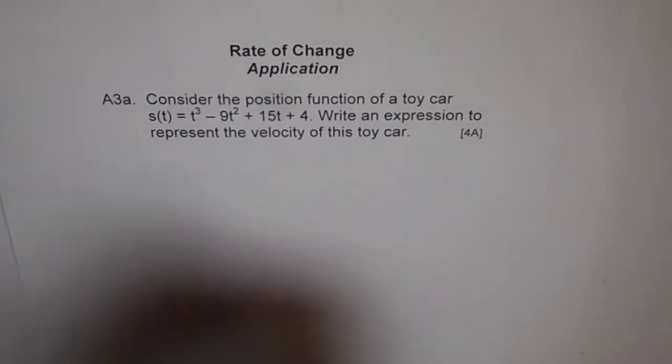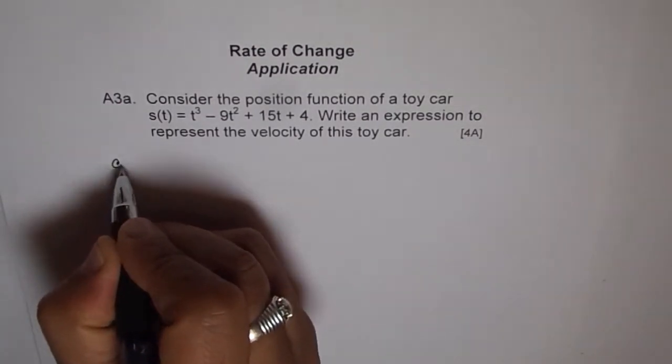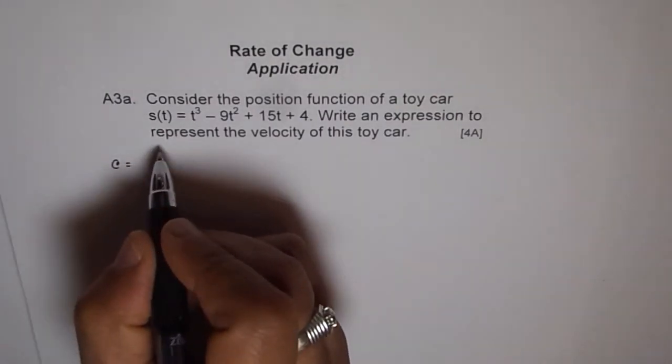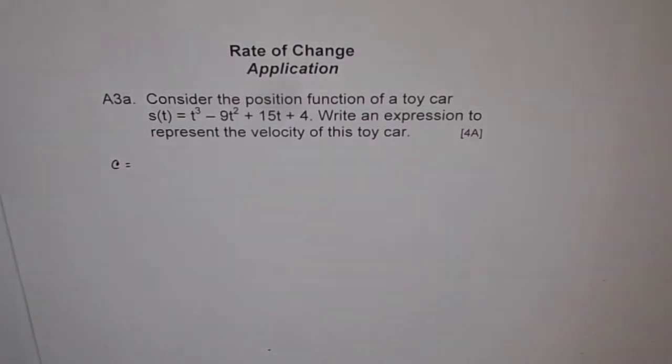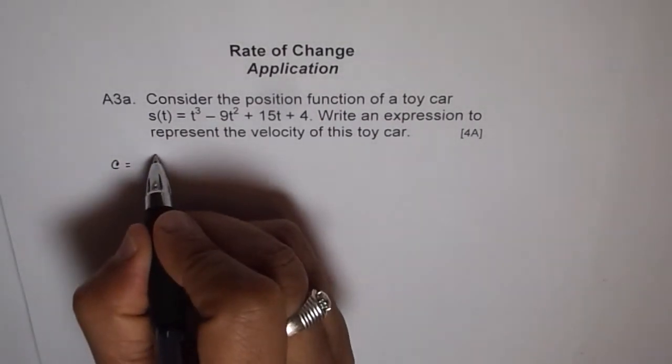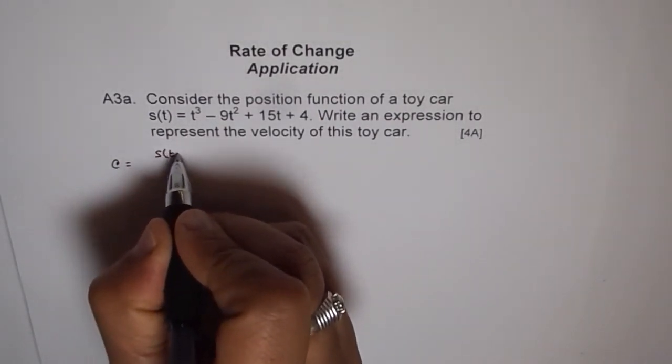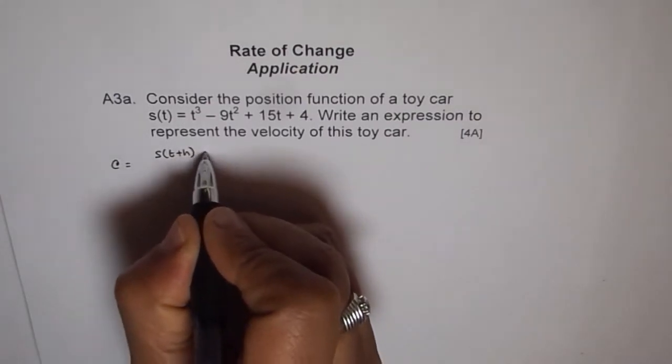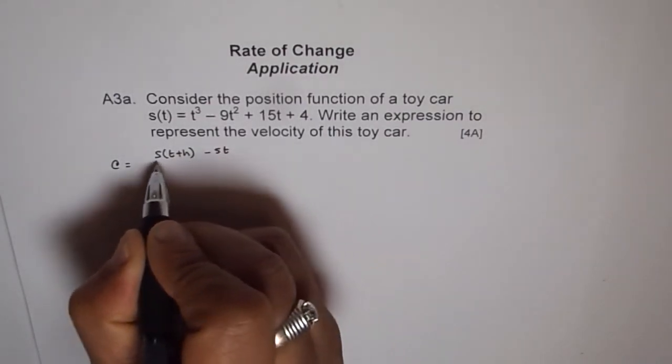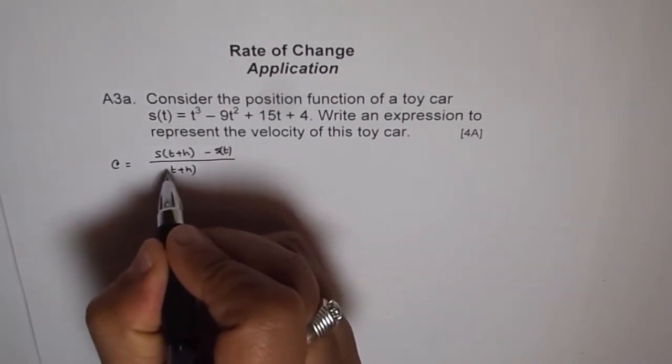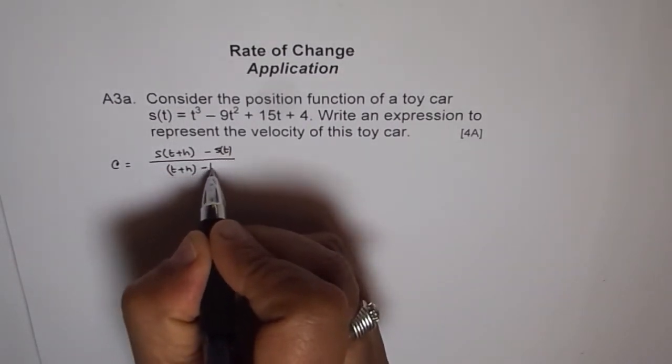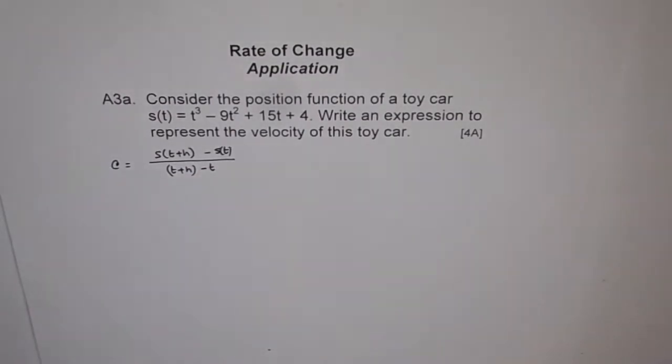Instantaneous rate of change, as you know, we will consider a point which is very, very close to the general point. So we can write this as [s(t+h) - s(t)] / [(t+h) - t]. Depending on accuracy, let's say you need two decimal place accuracy, then h is 0.001. You can find your answer.